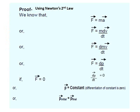It's proof, by using Newton's second law, we know that force is equal to mass into acceleration. By putting the value of acceleration in terms of dv by dt, you got d by dt of mass into velocity and mass into velocity is p, the momentum. So f is equal to dp by dt.